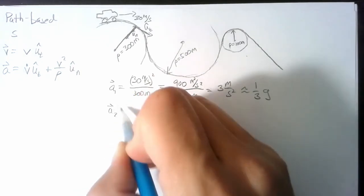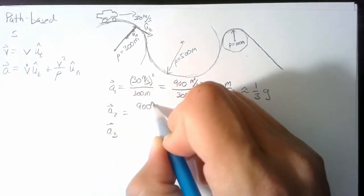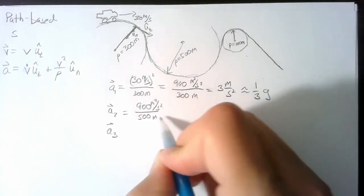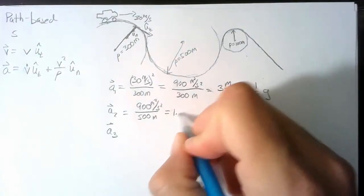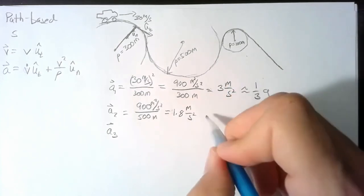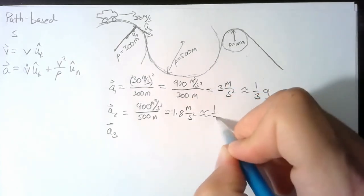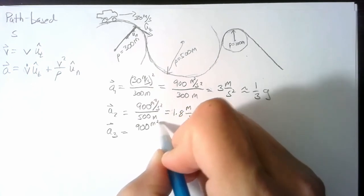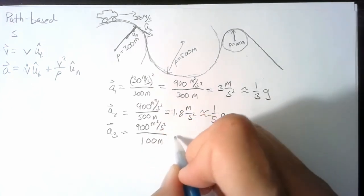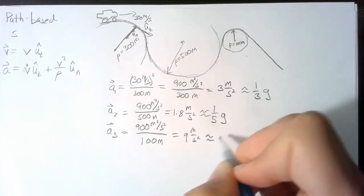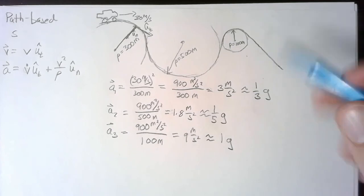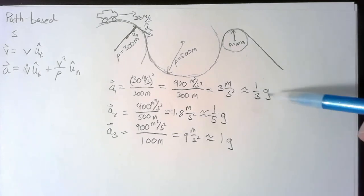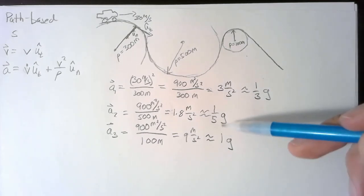For turn 2: 900 / 500 ≈ 1.8 meters per second squared, about one-fifth of Earth's gravity. For turn 3: 900 / 100 = 9 meters per second squared, which is right around 1g — a pretty uncomfortable lateral acceleration. A third of g would be noticeable, while one-fifth of g you would hardly feel.